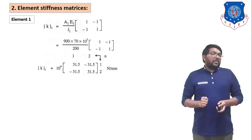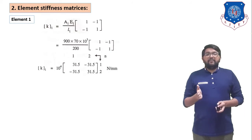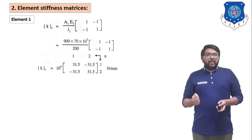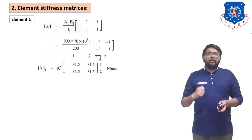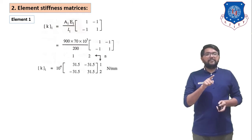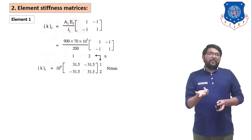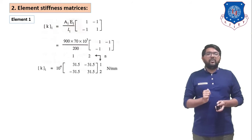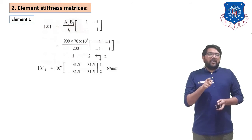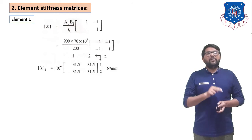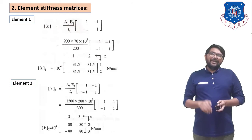For element 1, K₁ = (A₁E₁/L₁) × [1 −1; −1 1]. Substituting A₁ = 900, E₁ = 70×10³, L₁ = 200 and taking 10⁴ as common, we get K₁ = 10⁴ × [31.5 −31.5; −31.5 31.5], with row/column indices 1 and 2.